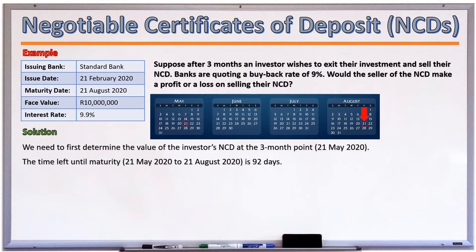Looking out for public holidays, there are none on 21 May or 21 August in South Africa, so we don't need to apply any business day conventions. We can count 92 days between those two dates. To determine profit or loss, we compare what the NCD would be worth today at the original yield of 9.9% versus what it is worth at the buyback rate of 9% — where 'today' means 21 May, the halfway point.